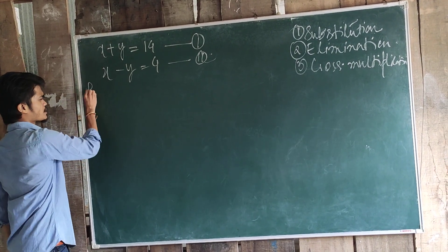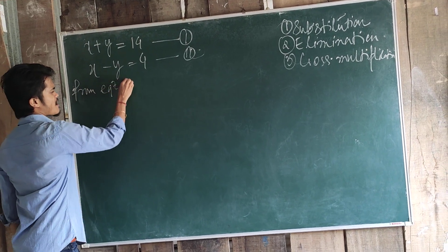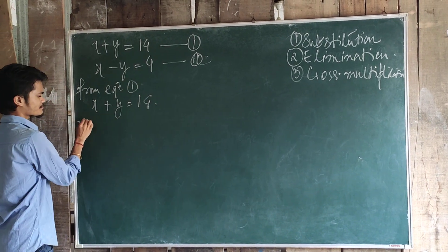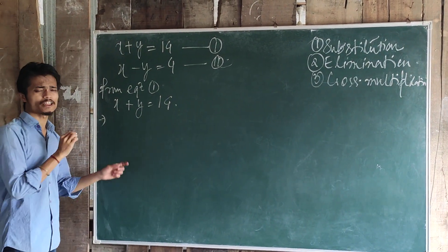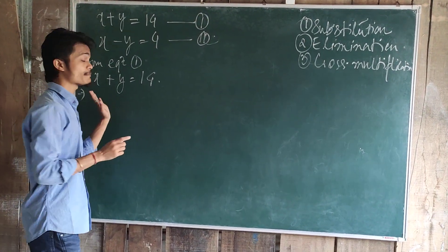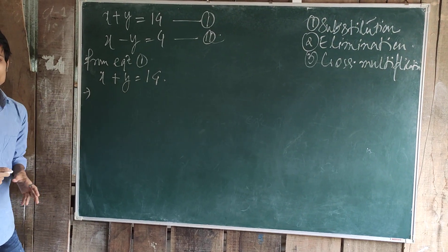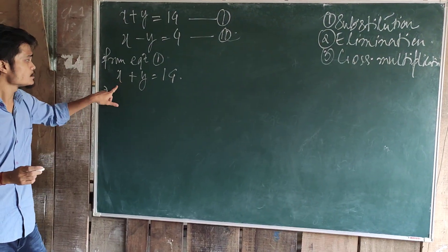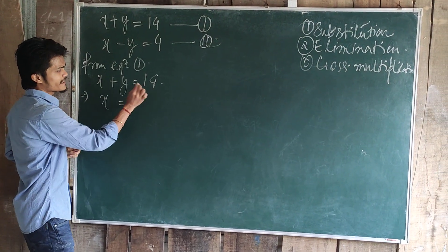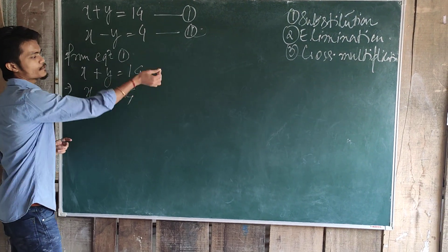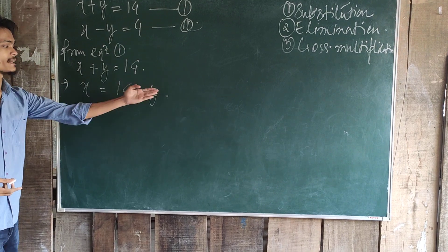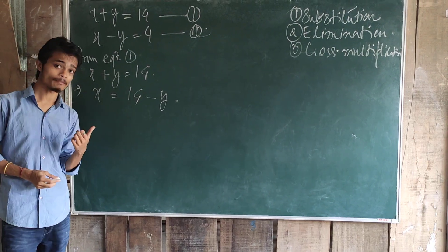From equation 1, we will take x plus y is equal to 14. We are going to keep any one variable on the left hand side and the remaining on the right hand side. Let us take x here. So x is equal to 14 minus y — this plus y will move to that side as minus y. So y is equal to 14 minus x.